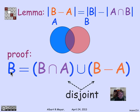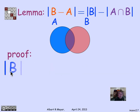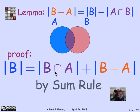We conclude from the sum rule that |B| = |B∩A| + |B-A|. Transposing the term for |B-A| to the left-hand side, I've proven the lemma. And we're done.